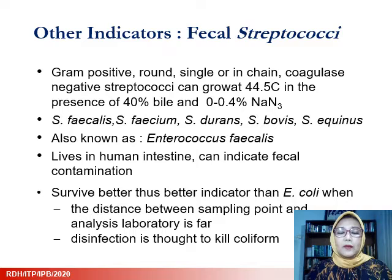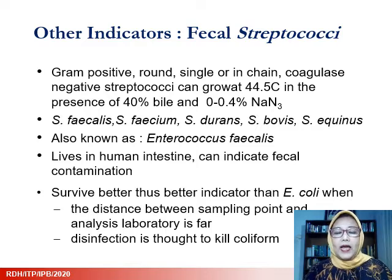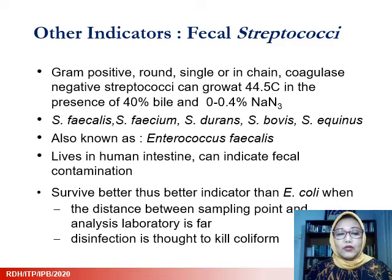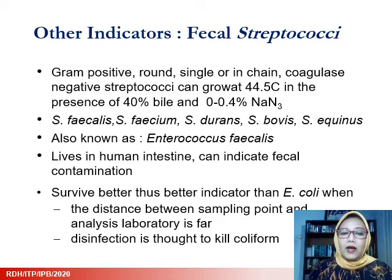In addition to these four groups, people also use fecal streptococci as indicator microorganisms. This group of bacteria are gram-positive, round, single or in chains, and can grow at 44.5°C in the presence of bile and azide. The group consists of Streptococcus faecalis, Streptococcus faecium, Streptococcus durans, Streptococcus bovis, and equinus. They are used as indicators because they live in human intestines and can indicate fecal contamination. An advantage is that they survive better than E. coli, making them useful when the distance between sampling point and analysis laboratory is far, or when disinfection has been applied that may have killed coliform.